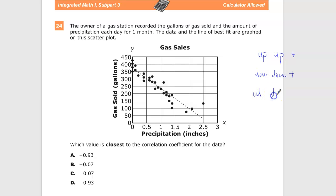Now, if one goes up and the other one goes down, up down is a whole other thing. We look at that as a negative correlation. As you can see, as the precipitation increases in inches, the gallons of gas sold goes down. So we know that this is a negative correlation.